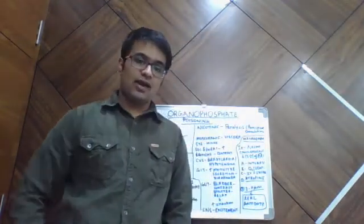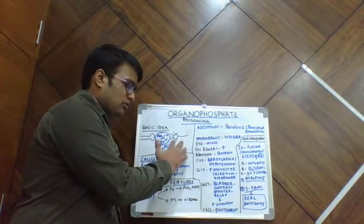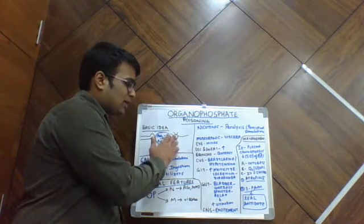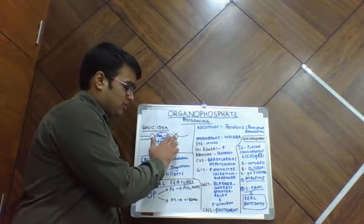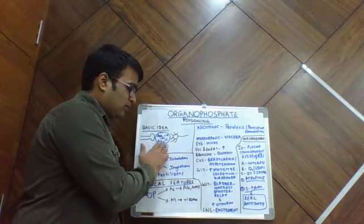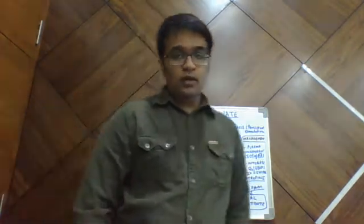Let's understand that with the help of a basic diagram. In this diagram, this is our presynaptic membrane, this is our synapse, and this is the postsynaptic membrane. The presynaptic membrane releases acetylcholine, which then acts on the postsynaptic membrane via the acetylcholine receptor. This acetylcholine is broken down into acetyl-CoA and choline by acetylcholinesterase, and acetylcholinesterase is inhibited by organophosphates. So inhibition of acetylcholinesterase by organophosphate leads to a lack of termination of cholinergic activity, leading to a persistent cholinergic activity on both nicotinic and muscarinic receptors.